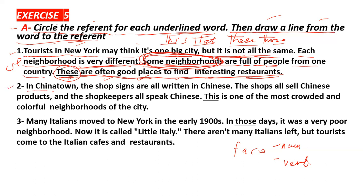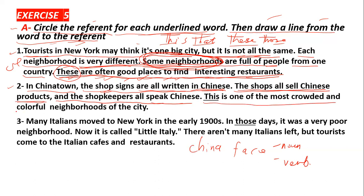Number Two. In Chinatown, the shop signs are all written in Chinese, لوحات المحلات كلها مكتوبة باللغة الصينية. Chinese is the nationality, الجنسية. The shops all sell Chinese products, كل المحلات تبيع المنتجات الصينية, and the shopkeepers all speak Chinese, أصحاب المحلات يتحدثون الصينية. This is one of the most crowded and colorful neighborhoods of the city, هذا واحد من المحلات المزدحمة بالألوان والأحياء للمدينة.